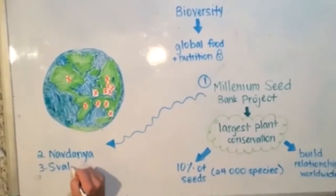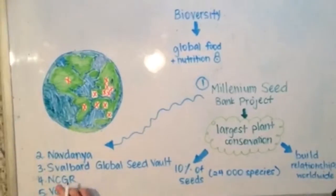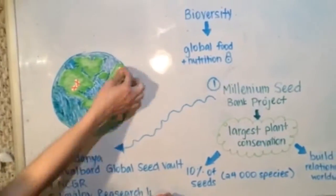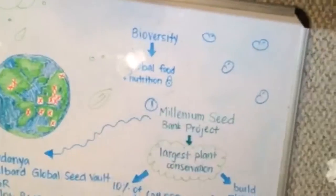The Millennium Seed Bank Project is considered one of the top five seed conservation organizations, along with Navdanya, the Svalbard Global Seed Vault, the National Center for Genetic Resources, and the Vavilov Research Institute.